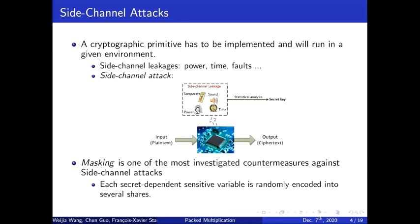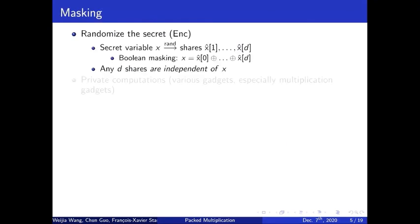Masking is one of the most investigated countermeasures against side-channel attack, where each circuit-dependent sensitive variable is randomly encoded into several shares. Here I present more details about the masking technique. A masking scheme is made up of two ingredients. The first one is called encoder, and it randomizes each circuit variable, say x, into a number of shares, such that any d shares are independent of x. So we can see that the encoder provides the security for the circuit variable such as a key.